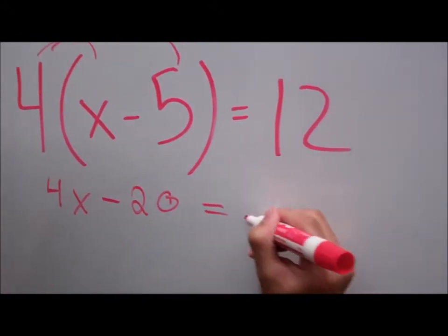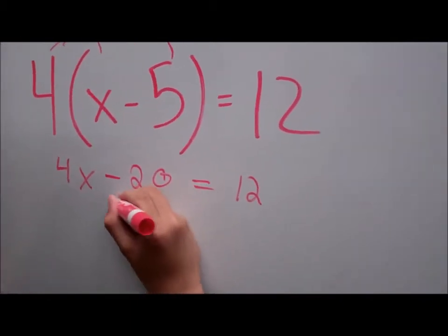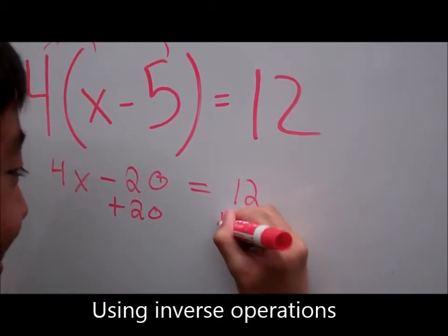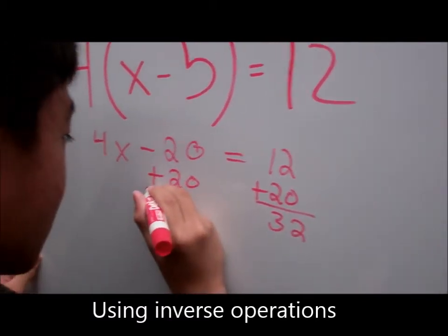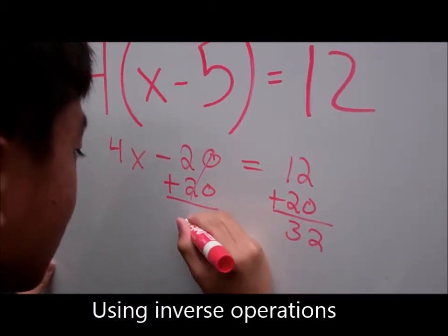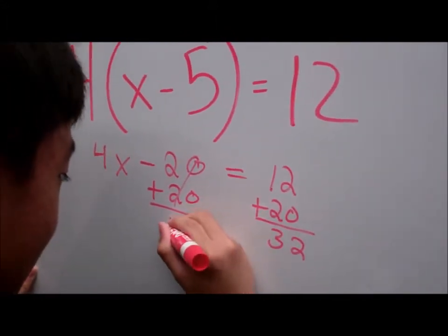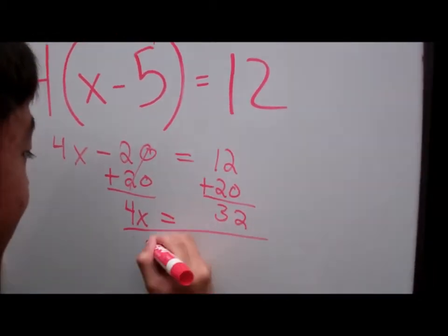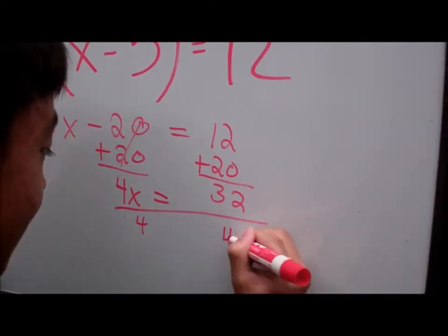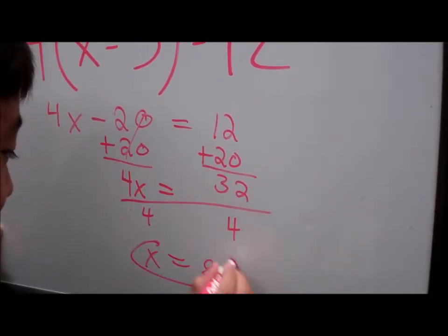So, 4 times x is 4x and 4 times 5 is 20. Now we're going to add 20 to each side of the equation. As Dennis is doing right here, equaling 32 and canceling itself out. Then you bring down 4x. So it's 4x equals 32. Now we're going to divide both sides by 4. x equaling 8. Good job Dennis.